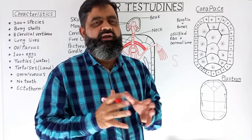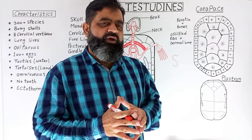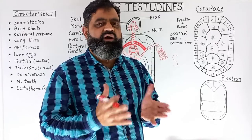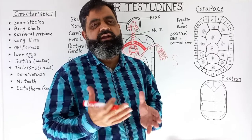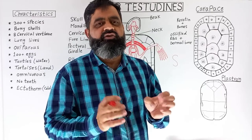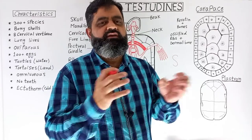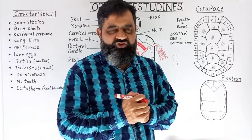The animal lives between these two shells and cannot be separated from them. Only the forelimbs, hind limbs, head, and neck can be retracted out from the shell and then pulled back into the shell.